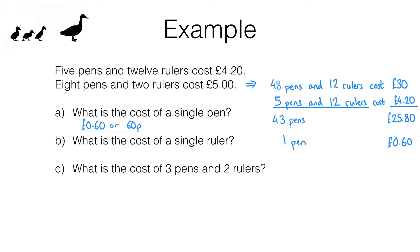We can now use this to work out the cost of a ruler. Let's look at this line here. If each pen is 60p, 8 pens is going to cost 8 lots of 60p, and 8 lots of 60p is 480 pence or 4 pounds 80. Now if that costs 4 pounds 80 and the total for all of this is 5 pounds, then the two rulers must cost 20 pence.